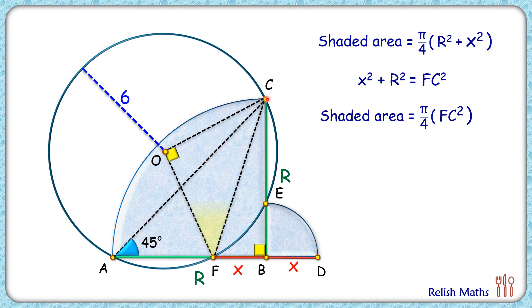If you look at this triangle COF, in this triangle CO is radius and OF is also radius, so both are 6 centimeter. Applying Pythagoras theorem we'll get 6² + 6² equals CF², so here we are getting FC² as 72. Putting this value in the shaded area formula, we'll get shaded area as π/4 times 72. Solving it, we'll get shaded area as 18π centimeter square and that's our answer. Now let's have a look at the logical approach.